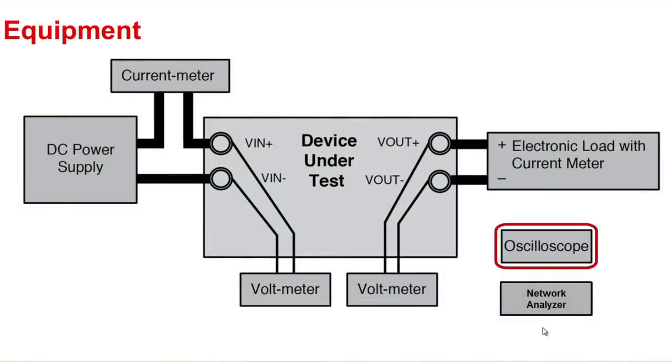You'll also need an oscilloscope for noise measurements, capable of 500 megahertz or above, and a network analyzer. A low frequency network analyzer or a frequency response analyzer, as they're often called, is necessary for your traditional stability measurements.